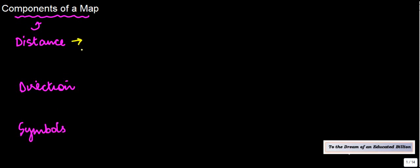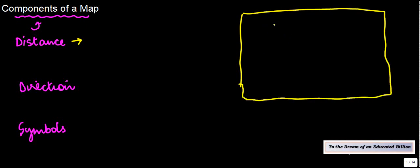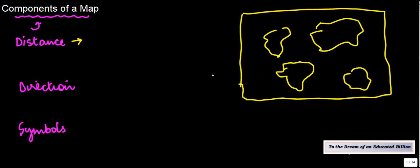First, let's check out distance. Now a map, basically, if you see, is not as big as what it represents. So let's say, for example, if I have this bigger map of Earth, when it shows various countries, various continents, and various places which are there, right?